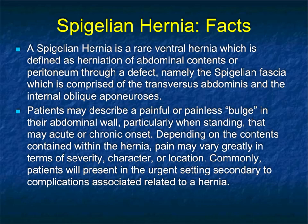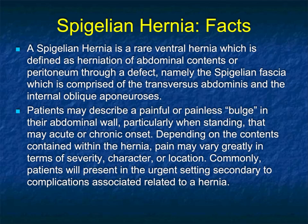A Spigelian hernia is a rare type of ventral hernia defined as herniation of abdominal content or peritoneum through a defect in the Spigelian fascia, which is comprised of the transversus abdominis and internal oblique aponeurosis. Patients can describe a painful or painless bulge in their abdominal wall, particularly when standing, that may be acute or chronic. Depending on the contents within the hernia, pain may vary greatly in severity, character, and location. Patients commonly present in the urgent setting secondary to complications.